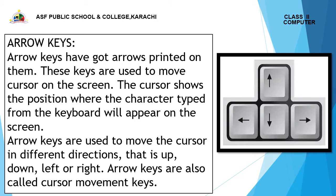Arrow keys: Arrow keys have arrows printed on them. These keys are used to move the cursor on the screen. The cursor shows the position where the characters typed from the keyboard will appear on the screen. Arrow keys are used to move the cursor in different directions — that is, up, down, left, or right. Arrow keys are also called the cursor movement keys.